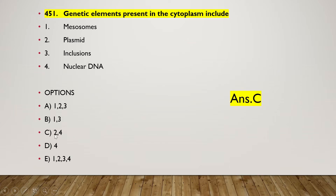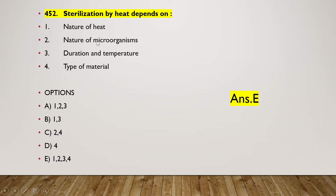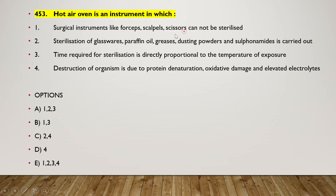The right answer is option C — two and four — plasmid and nuclear DNA are the genetic elements. The next question: sterilization by heat depends on nature of heat, nature of microorganisms, duration and temperature, or type of material. The right answer is option E — all options are correct about sterilization by heat.